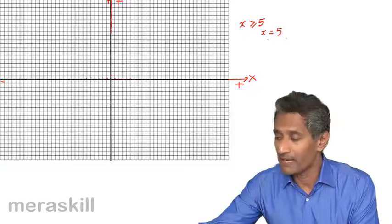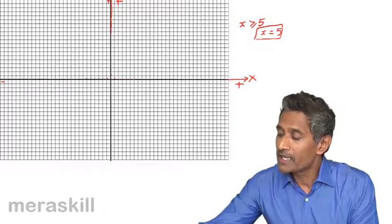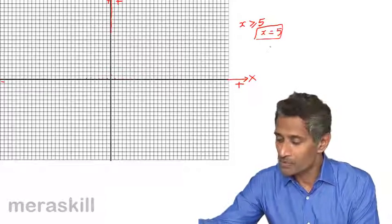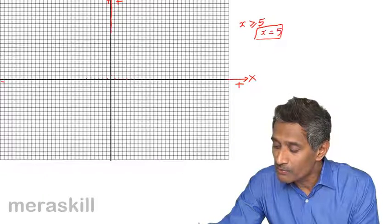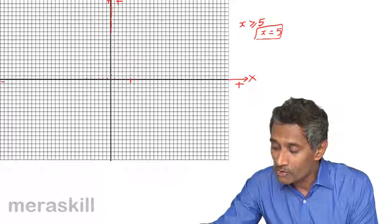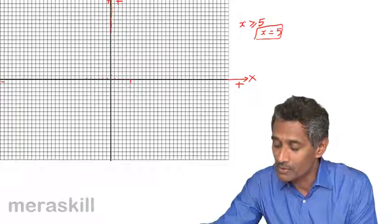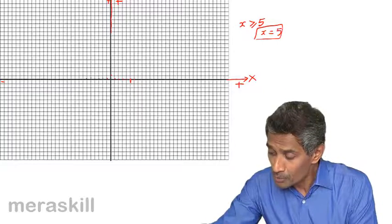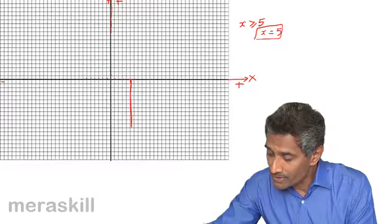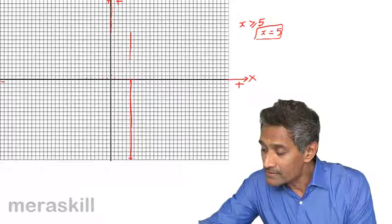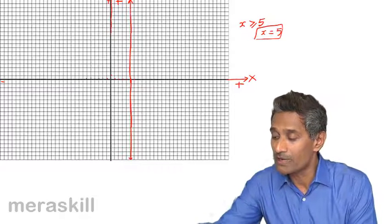What do we understand by x equals 5? It is that line in which every point has the x-coordinate as 5. So we count 1, 2, 3, 4, 5 — this point is at x equals 5. Points on this line are: 5 comma 0, 5 comma 1, 5 comma 2, 5 comma 3, 5 comma 4, and similarly 5 comma minus 1, 5 comma minus 2. Every point has x-coordinate as 5. If you join these points, you get this particular vertical line — x equals 5.